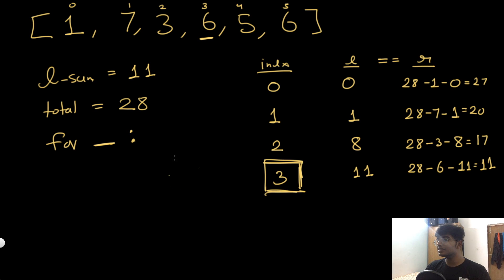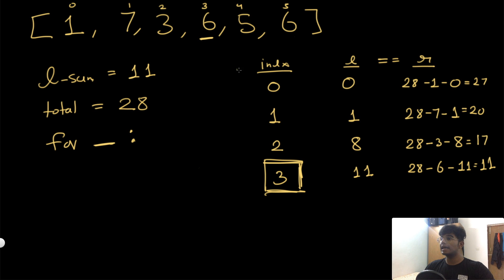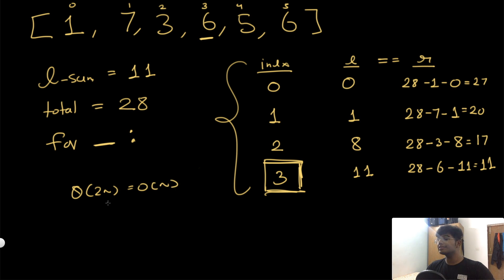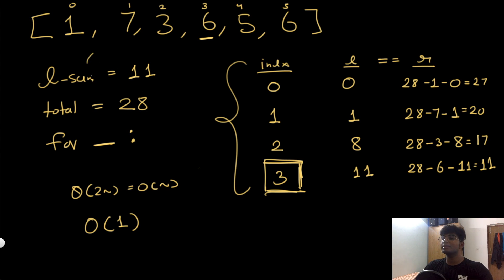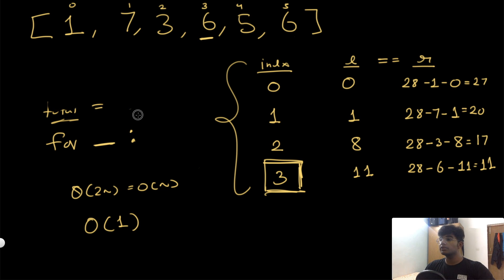With this optimized approach, computing the total sum takes O(n) time, and iterating through the array takes another O(n) in the worst case — so overall O(n) time. The space complexity is constant O(1) since we're only using two variables. This is the best solution we can find.